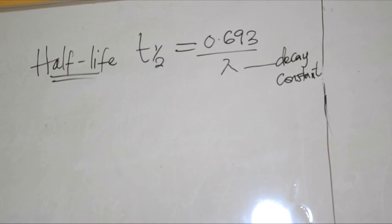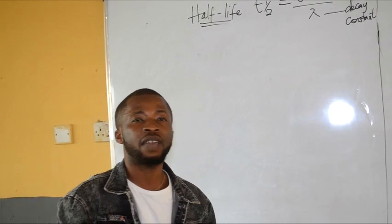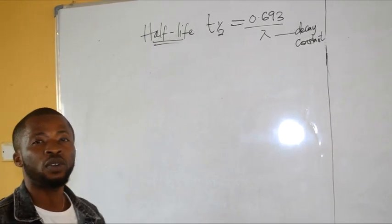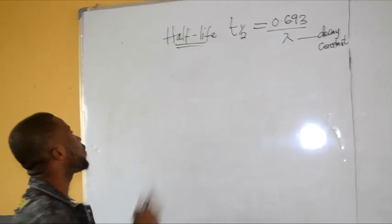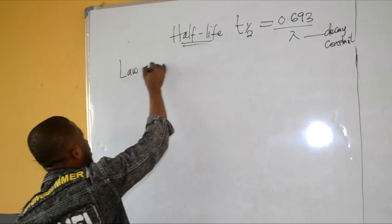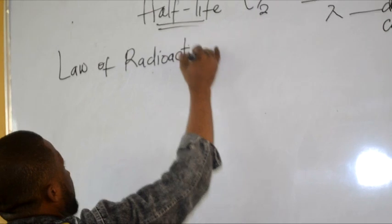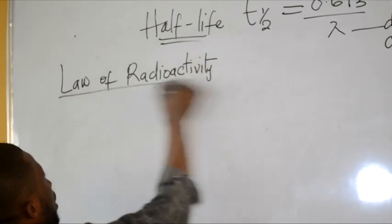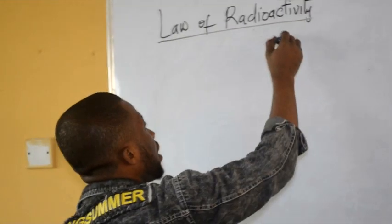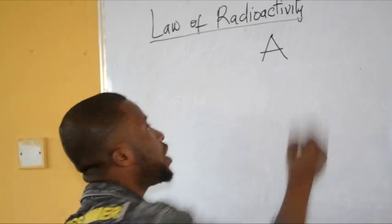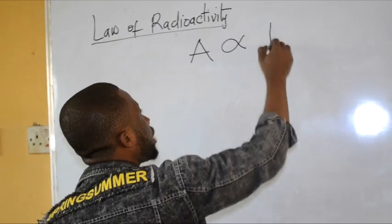So how do we derive the formula for half-life? To derive the half-life formula, first of all we have to recall the radioactive law. The law of radioactivity states that the activity of a radioisotope is directly proportional to, or dependent on, the number of atoms present.